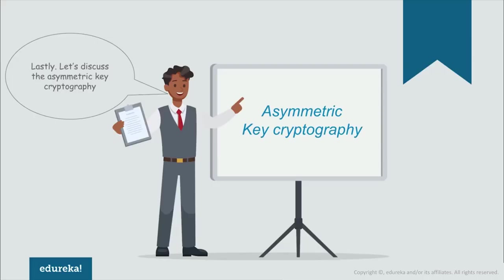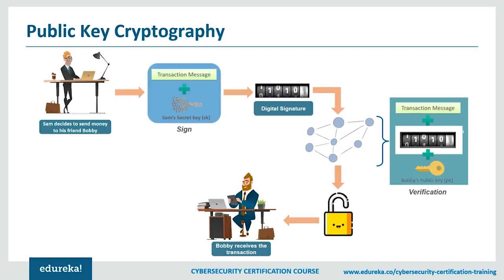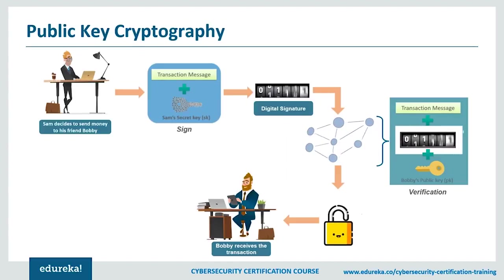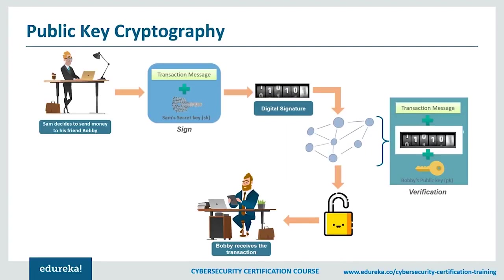Asymmetric cryptography, also known as public key cryptography, uses a pair of keys: a public key that may be widely distributed and a private key known only to the owner. It accomplishes two functions: authentication, where the public key verifies that the holder of the paired private key sent the message, and encryption, where only the private key holder can decrypt the message. The strength of a public key system relies on the computational effort required to find the private key from its paired public key.